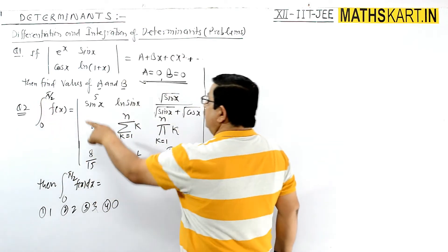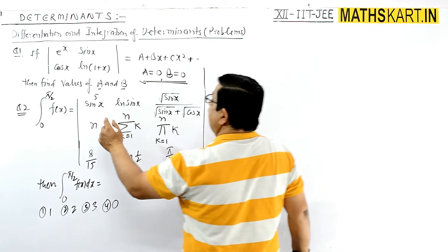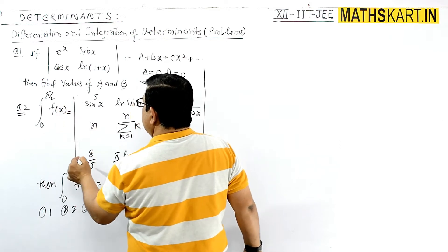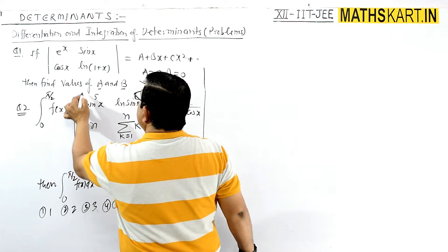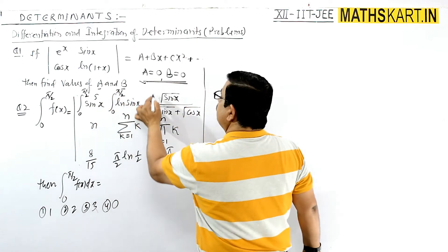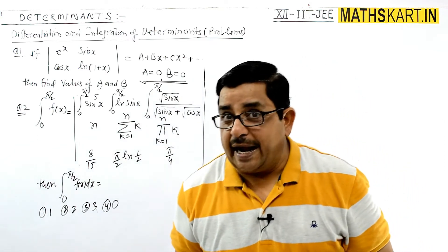And here we have to take the integration of all the numbers. Question ko phir solution mein convert kar rahe hai, 0 se pi by 2, and this is 0 to pi by 2, 0 to pi by 2, and keeping the other two rows as it is.